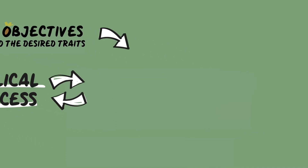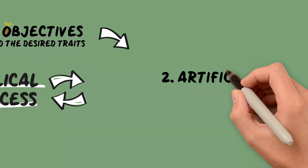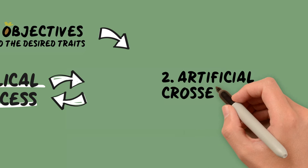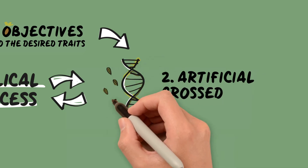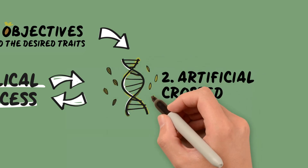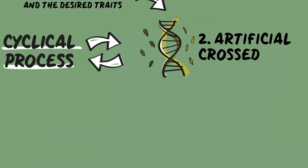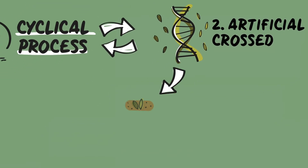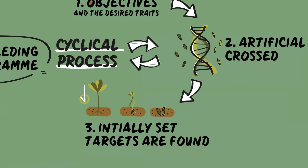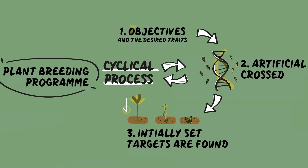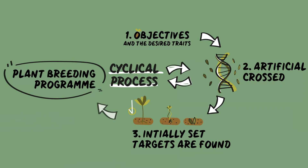Then, plants are crossed in order to generate genetic variability. Promising lines from the progeny of these crosses are selected and tested until varieties that meet the initially set targets are found. These new varieties can be used for further crosses.